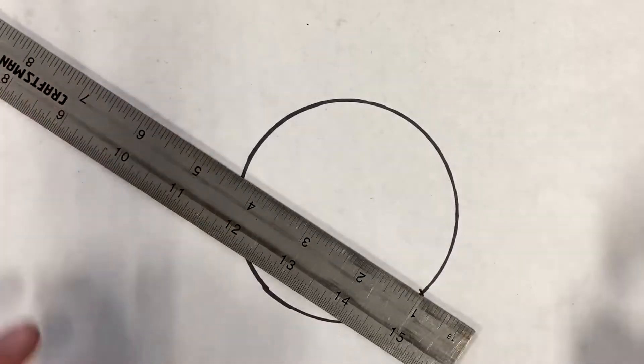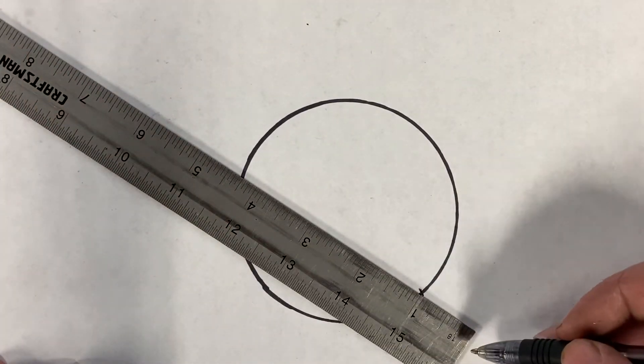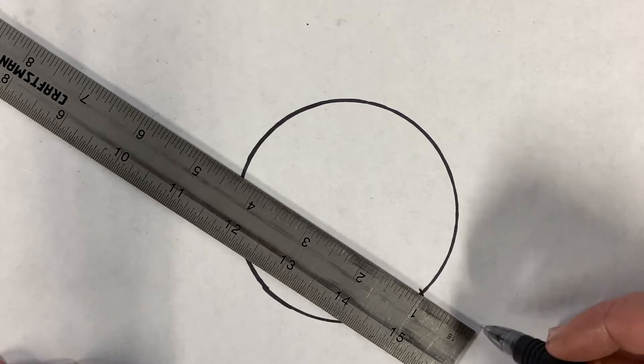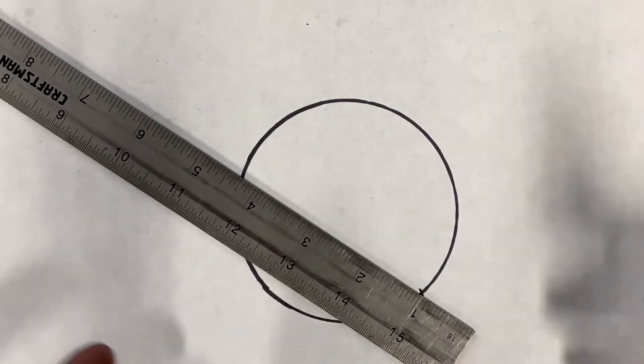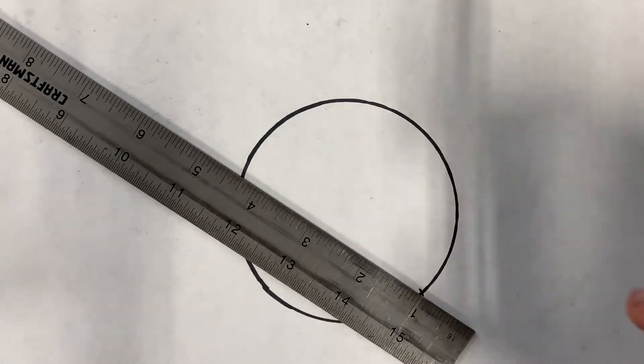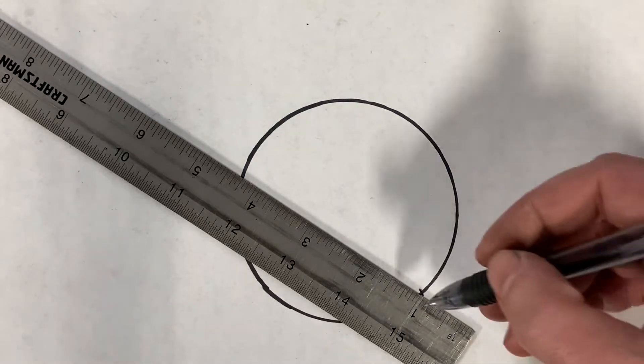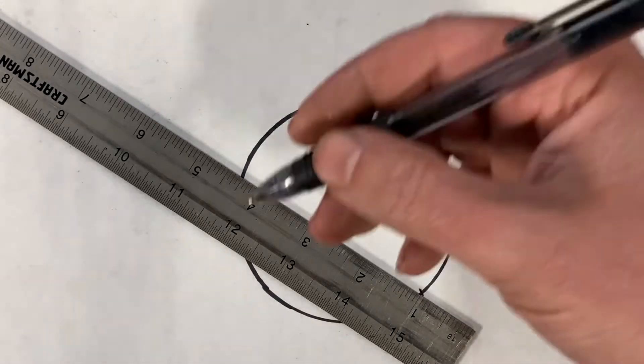Now I like to start at one, not the edge of the ruler, because you're not sure if this edge was rolled over or maybe there's something in the way where you're not quite exactly on zero. So I start at one and I work my way from there.